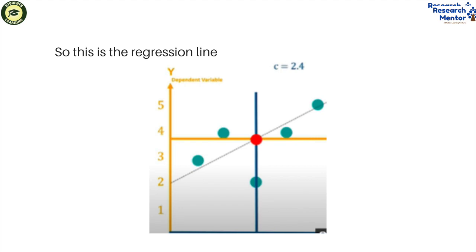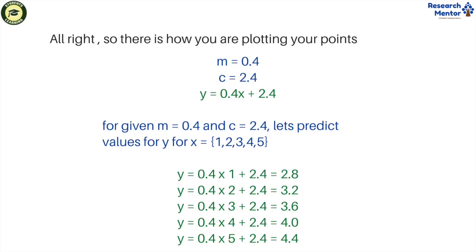All right, so this is how you are plotting your points. Suppose m equals 0.4, c equals 2.4, and then y equals 0.4x plus 2.4. For given m equals 0.4 and c equals 2.4, let's predict values for y for x equals 1, 2, 3, 4, 5.